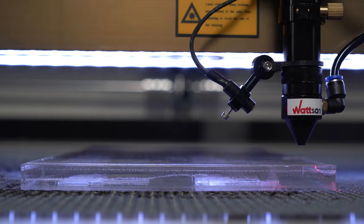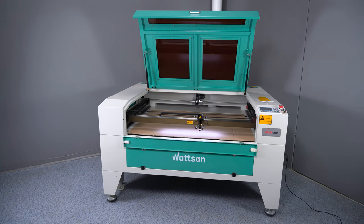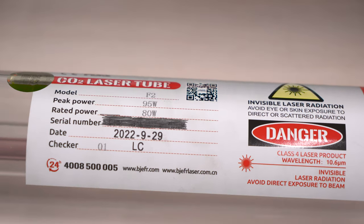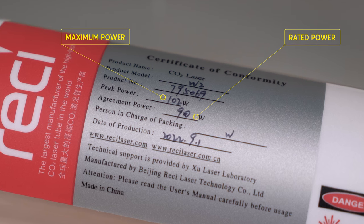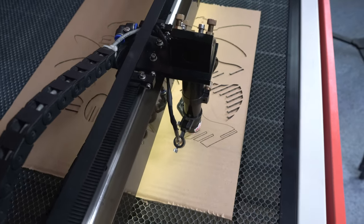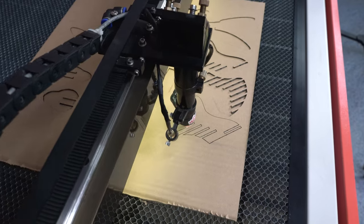Back to the choice. In some cases, the laser tube is specified with two power ratings. For example, 80-95 watts. In this case, the first number is the rated power and the second is the maximum power. And most of the time, the laser operates at rated power.